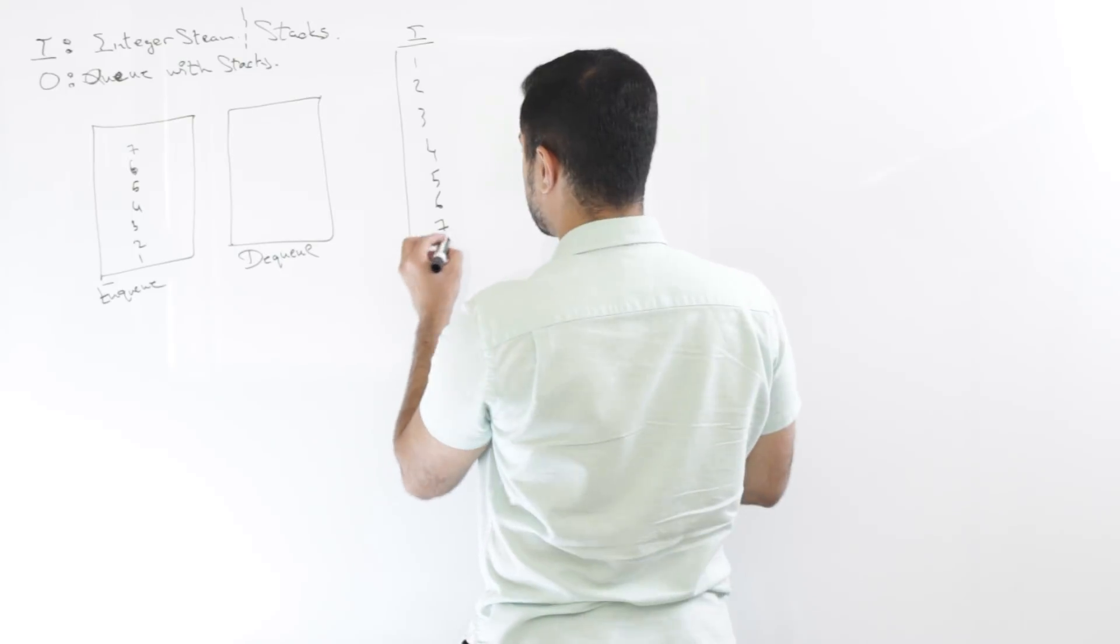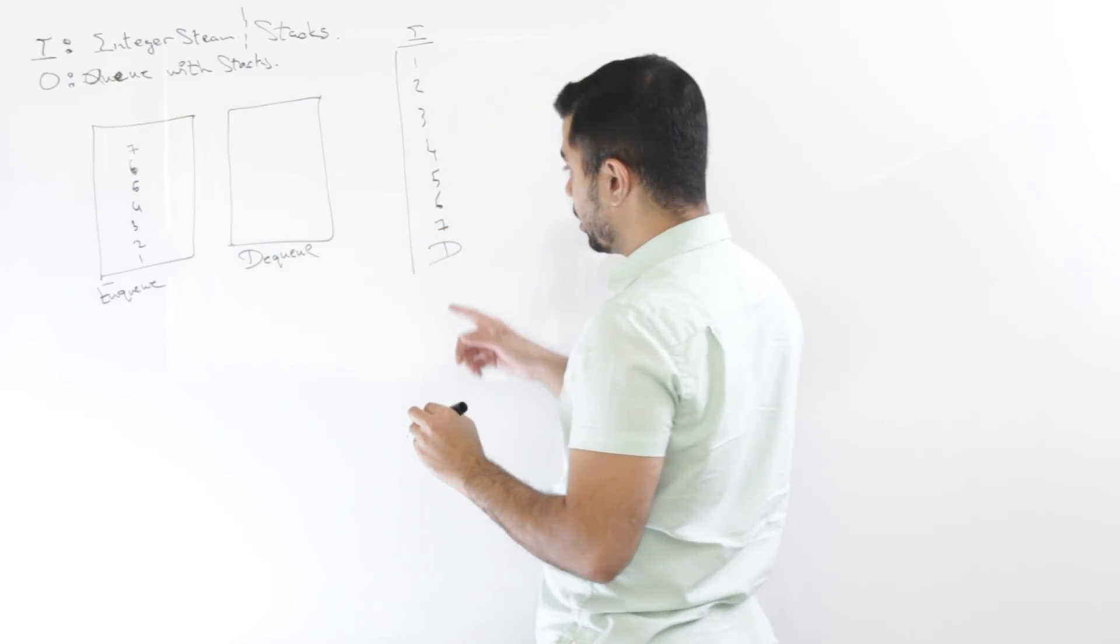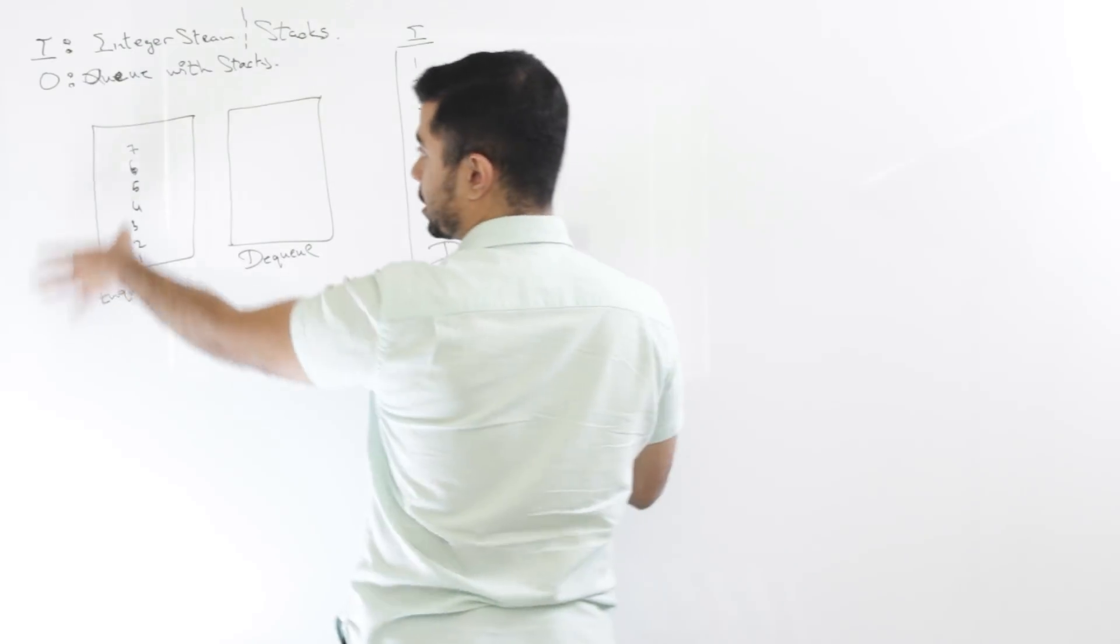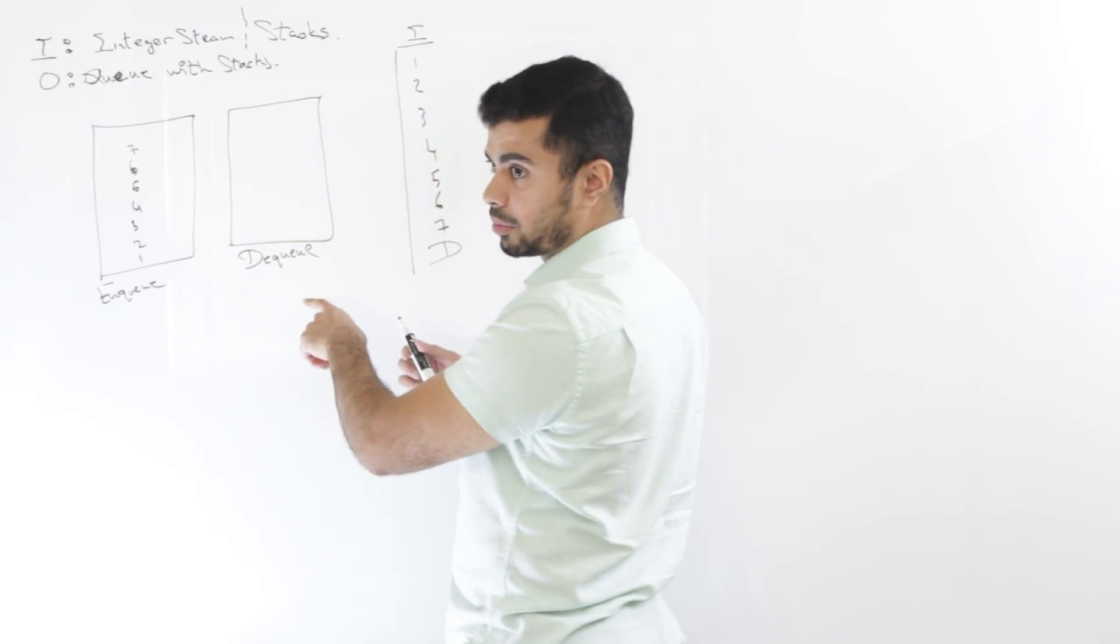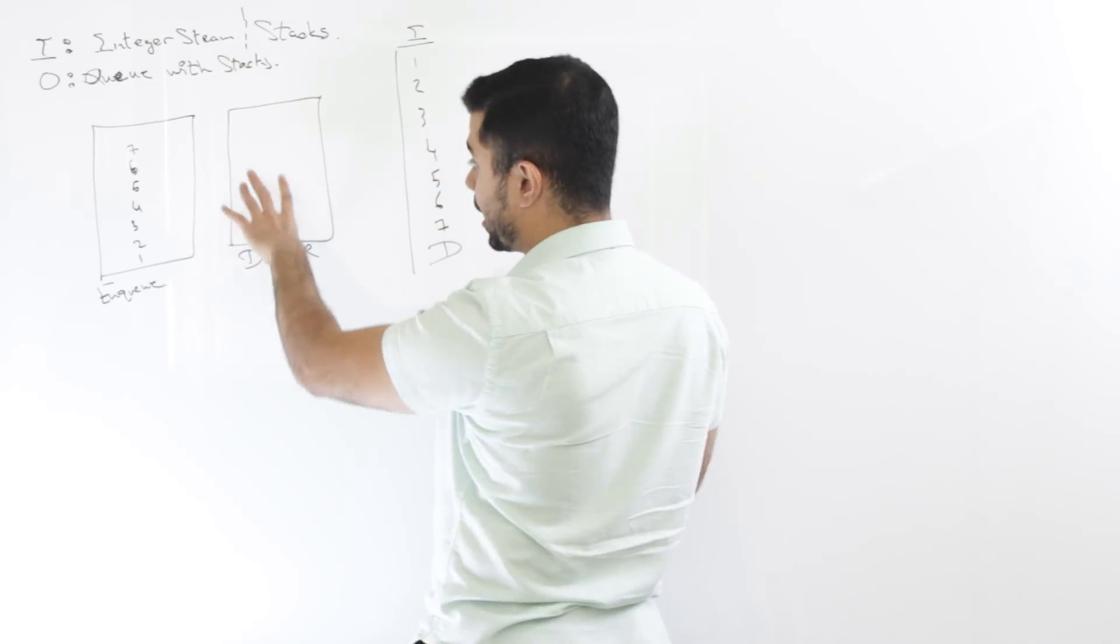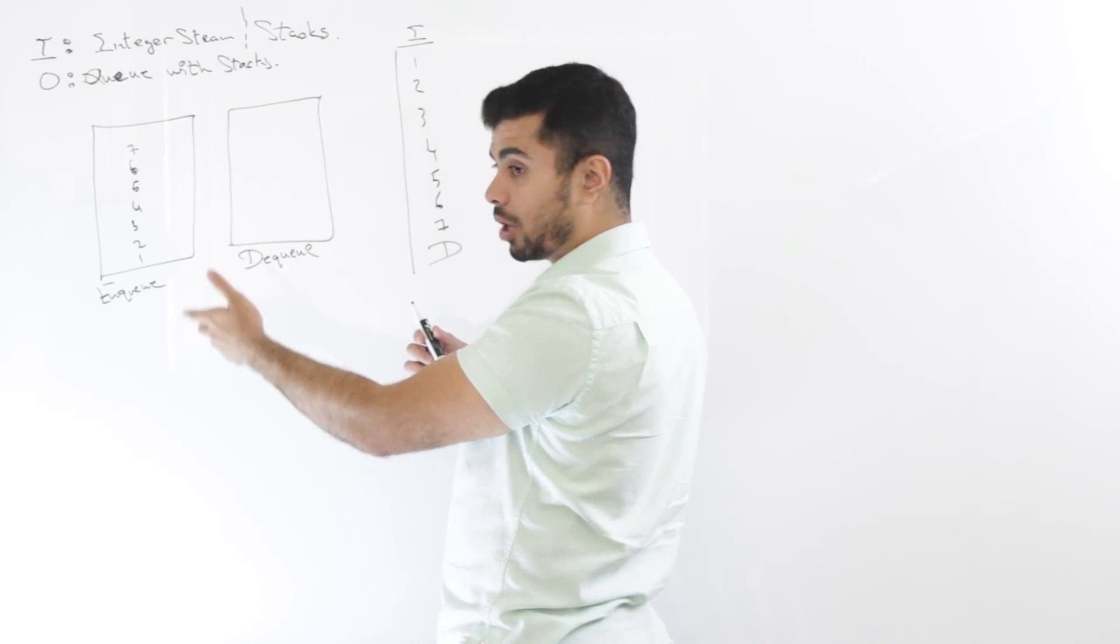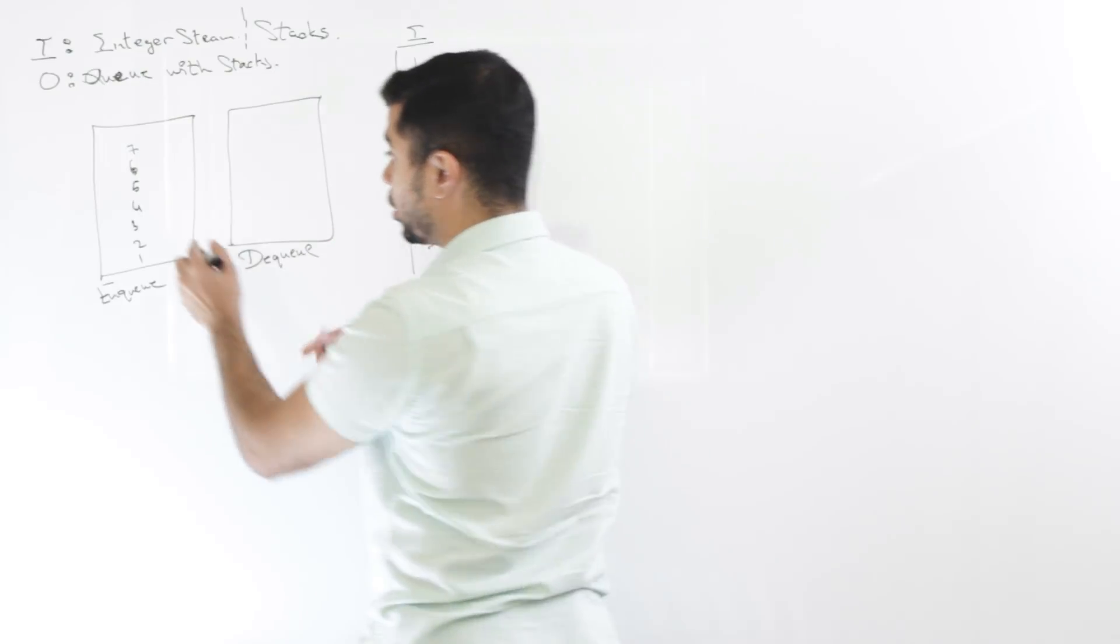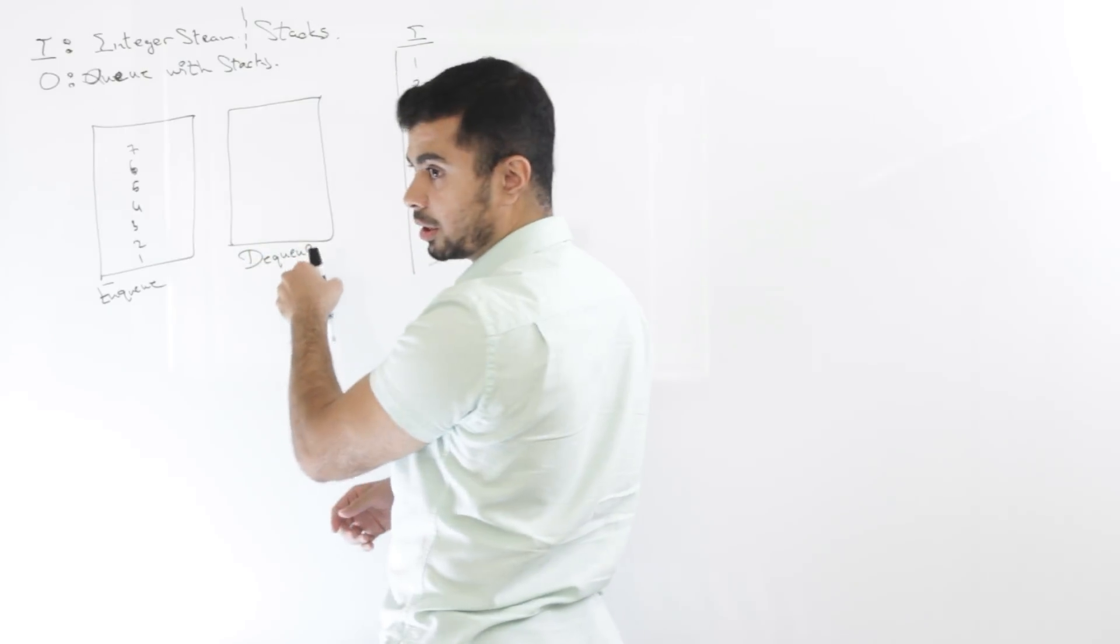Now, the moment there is a, let's say D is for dequeue. The moment there is a dequeue command, then I will need to reverse this entire thing. So that's when the dequeue stack comes in. So basically I will see, hey, is there anything in the dequeue stack? If there is, then you output that.